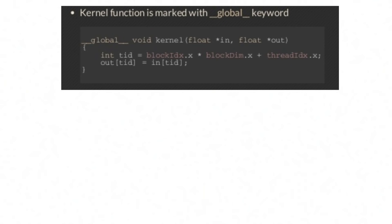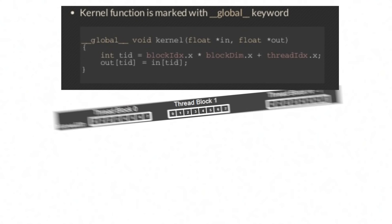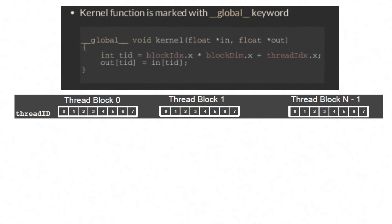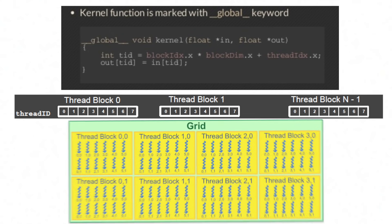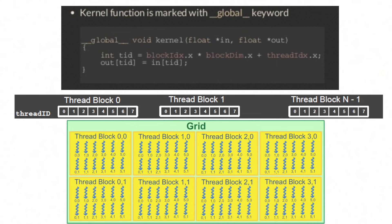Let's talk about GPU architecture in the way that CUDA views it. The key part of CUDA code is the kernel program. The kernel is a function that can be executed in parallel on the GPU, and it's executed by an array of CUDA threads. All threads run the same code, and each thread has an ID that it uses to compute memory addresses and make control decisions. You can run thousands of these threads on the GPU, and CUDA organizes threads into a grid hierarchy of thread blocks.